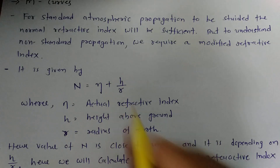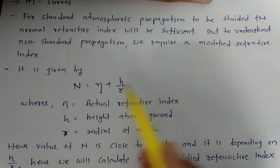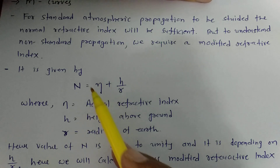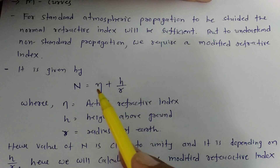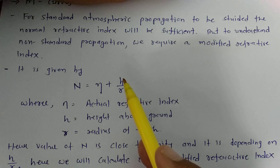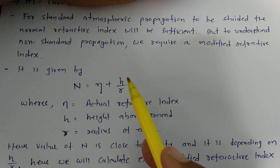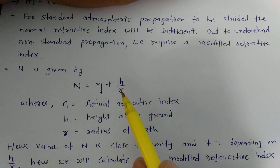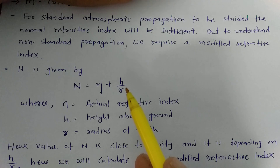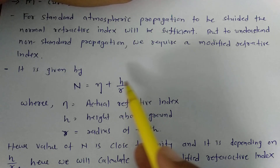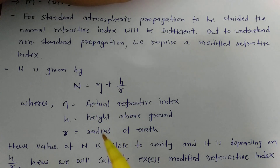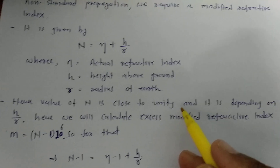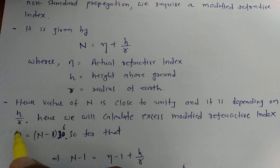Based on this formula, one can clearly see that the value of N will be very close to 1. The reason is the refractive index eta is almost unity, and h over r is a very small term since the height h is always much lower than the radius of the earth, which is approximately 6400 kilometers. So the value of N will be very close to unity, depending on h over r.